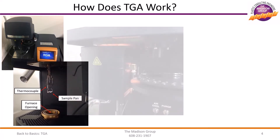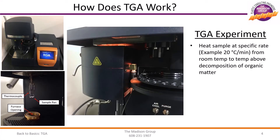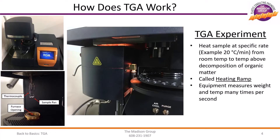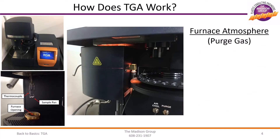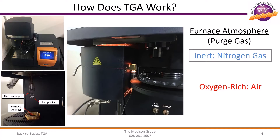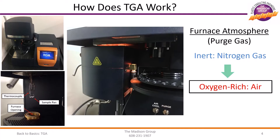A common TGA experiment involves heating the sample at a specific rate, for example 20 degrees C per minute, up to a given temperature. During this experiment, called a heating ramp, the weight of the sample in the pan and the temperature inside the furnace are recorded multiple times per second. This allows the equipment to record both changes in the weight of the sample and the rate of those weight changes as a function of time or temperature. Additionally, the atmosphere inside the furnace is controlled so that it is inert or oxygen-rich. Many TGA experiments involve switching from an inert atmosphere, such as nitrogen gas, to an oxygen-rich atmosphere such as dried compressed air. The reasons for having an inert or oxygen-rich atmosphere will be discussed in the Applications section.